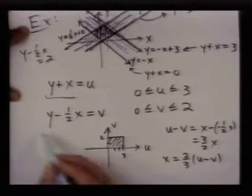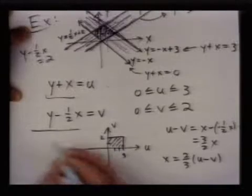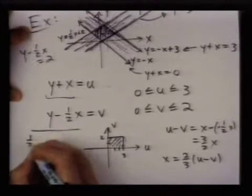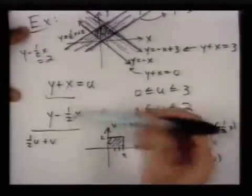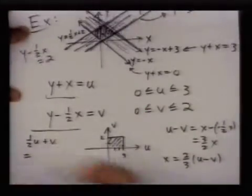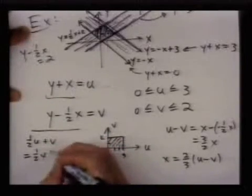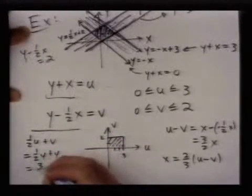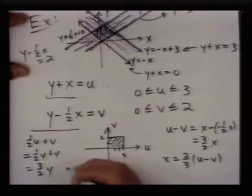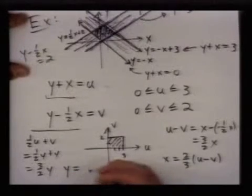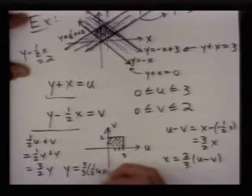And let me go over here and solve for y. If I take 1 half u plus v to cancel out the x's, I get 1 half y plus y. So I get 3 halves y, and this says y equals 2 thirds times 1 half u plus v.